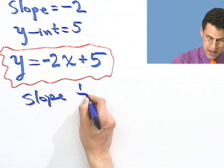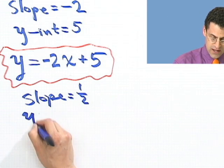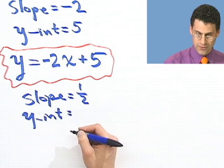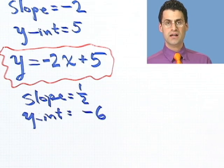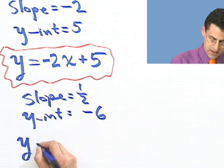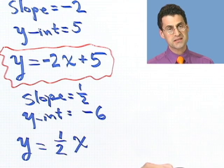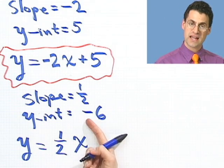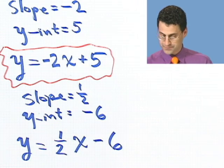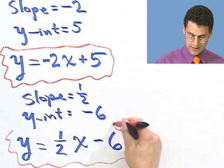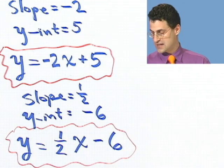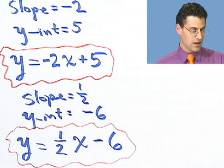Slope-intercept form — this is fantastic! How about slope equals one half and y-intercept equal to minus 6? Equation of a line? y equals one half times x, then plus the y-intercept, which is plus negative 6, so just minus 6. This cannot be easier. If you just have the slope and the y-intercept, you can immediately give the equation of the line.